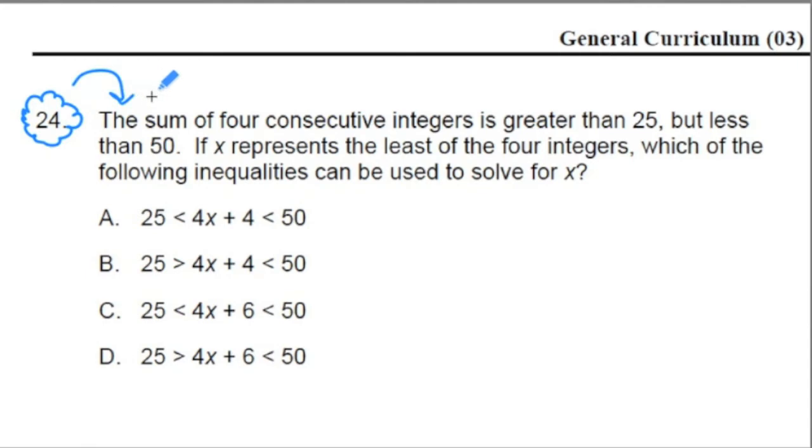Number 24 says the sum of four consecutive integers is greater than 25 but less than 50. If x represents the least of the four integers, which of the following inequalities can be used to solve for x? Let's start with this word sum of four consecutive integers.